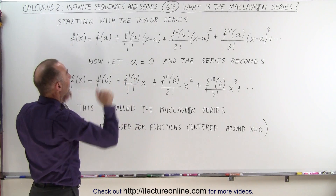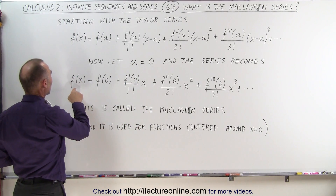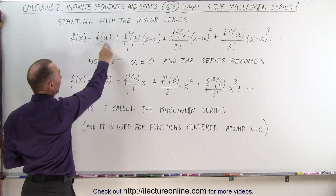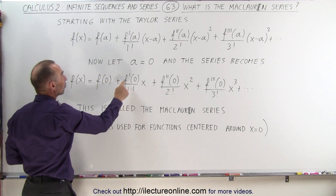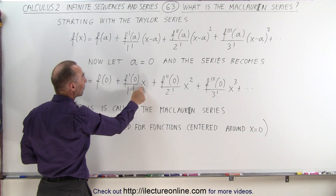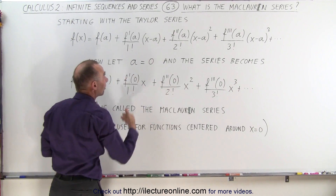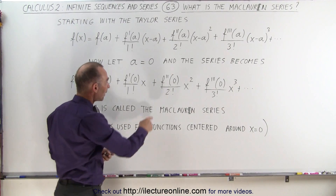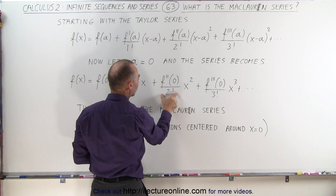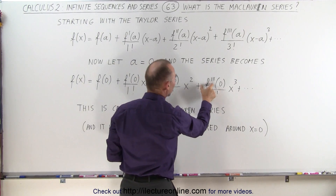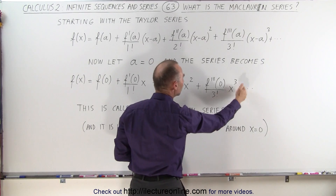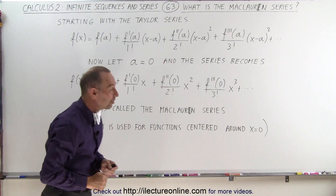Notice what happens to the Taylor series. We now have f of x equal to the function evaluated at zero, instead of evaluated at a, plus the derivative of the function evaluated at zero, divided by 1 factorial, times x. We no longer have the x minus a, because a is zero. Plus the second derivative evaluated at zero, divided by 2 factorial, times x squared, plus the third derivative evaluated at zero, divided by 3 factorial, times x cubed, and you can see how that continues.